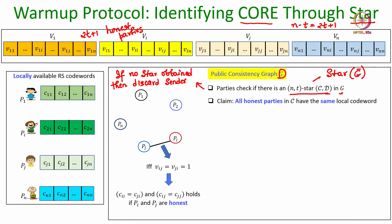We will consider the case when a star is obtained and how to take the protocol forward from that point. If a star is obtained, the first claim is that all honest parties in C have the same local codeword.